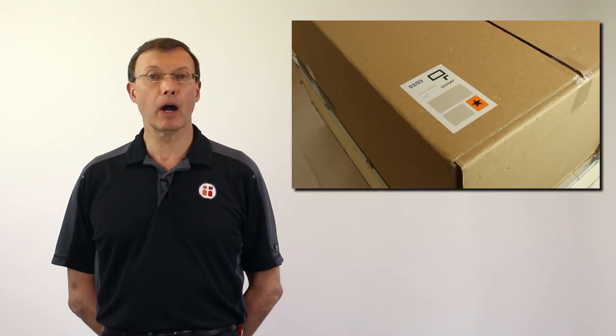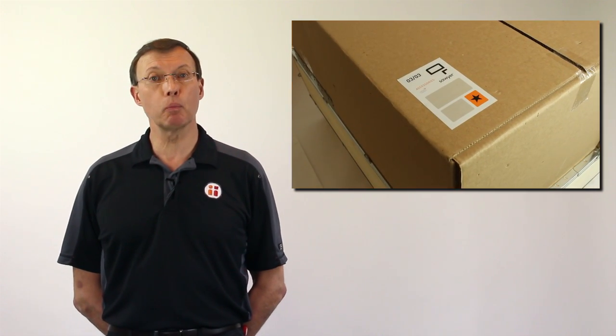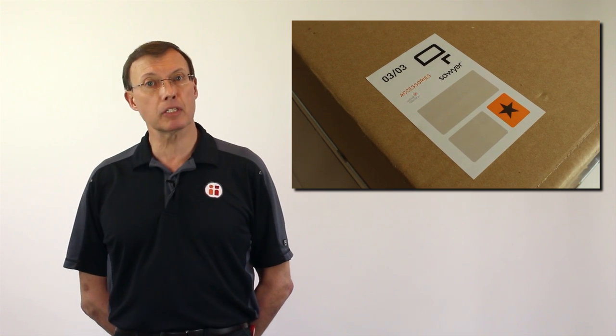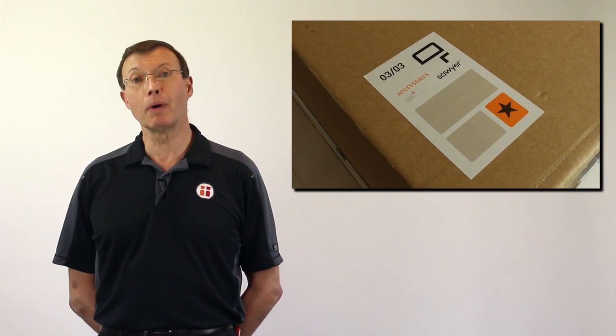Box one contains the robot arm. Box two contains the controller and cables. Box three contains the appropriate power cord for your location and any optional accessories such as grippers, tool plate, or a robot mounting plate.